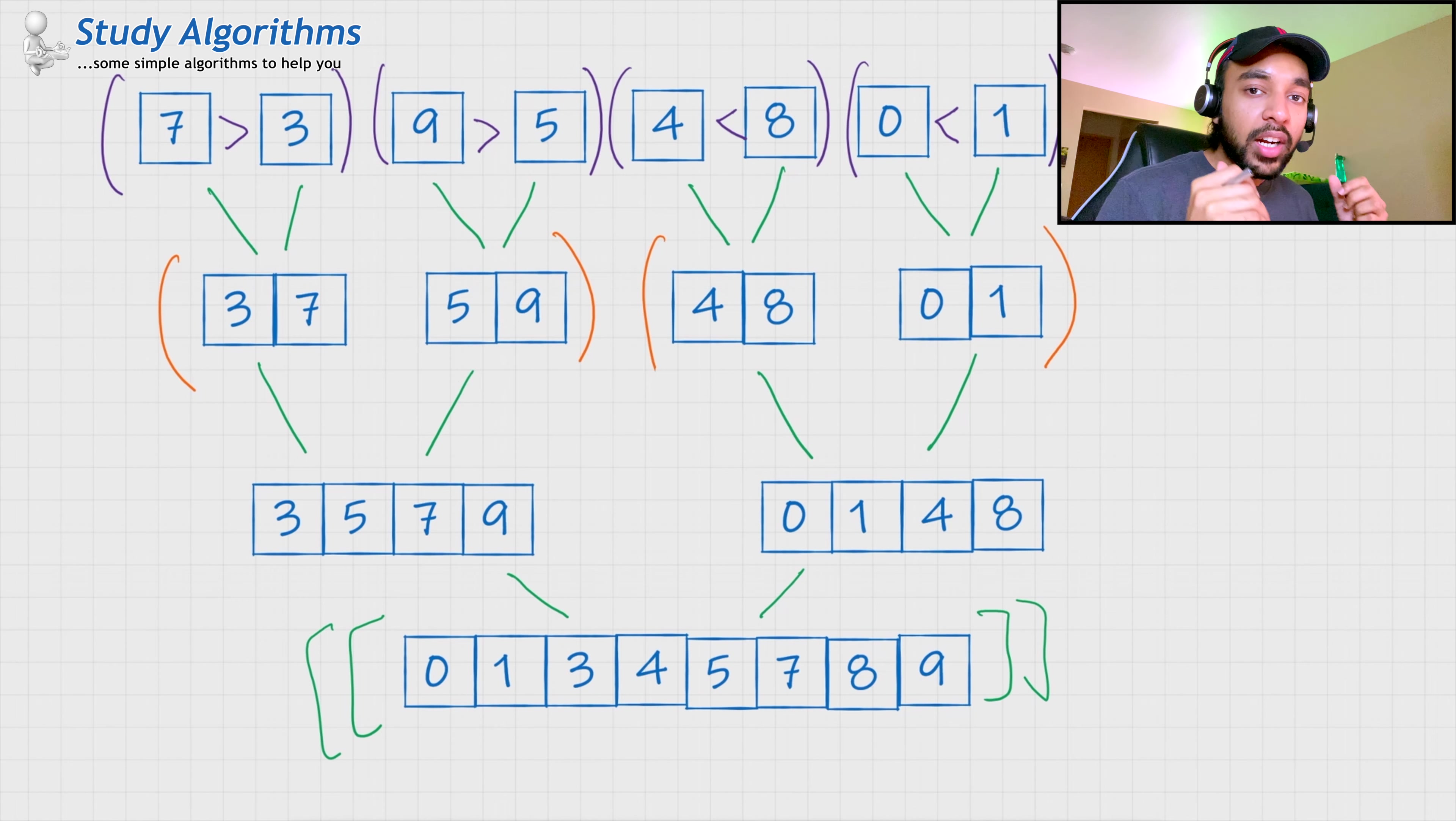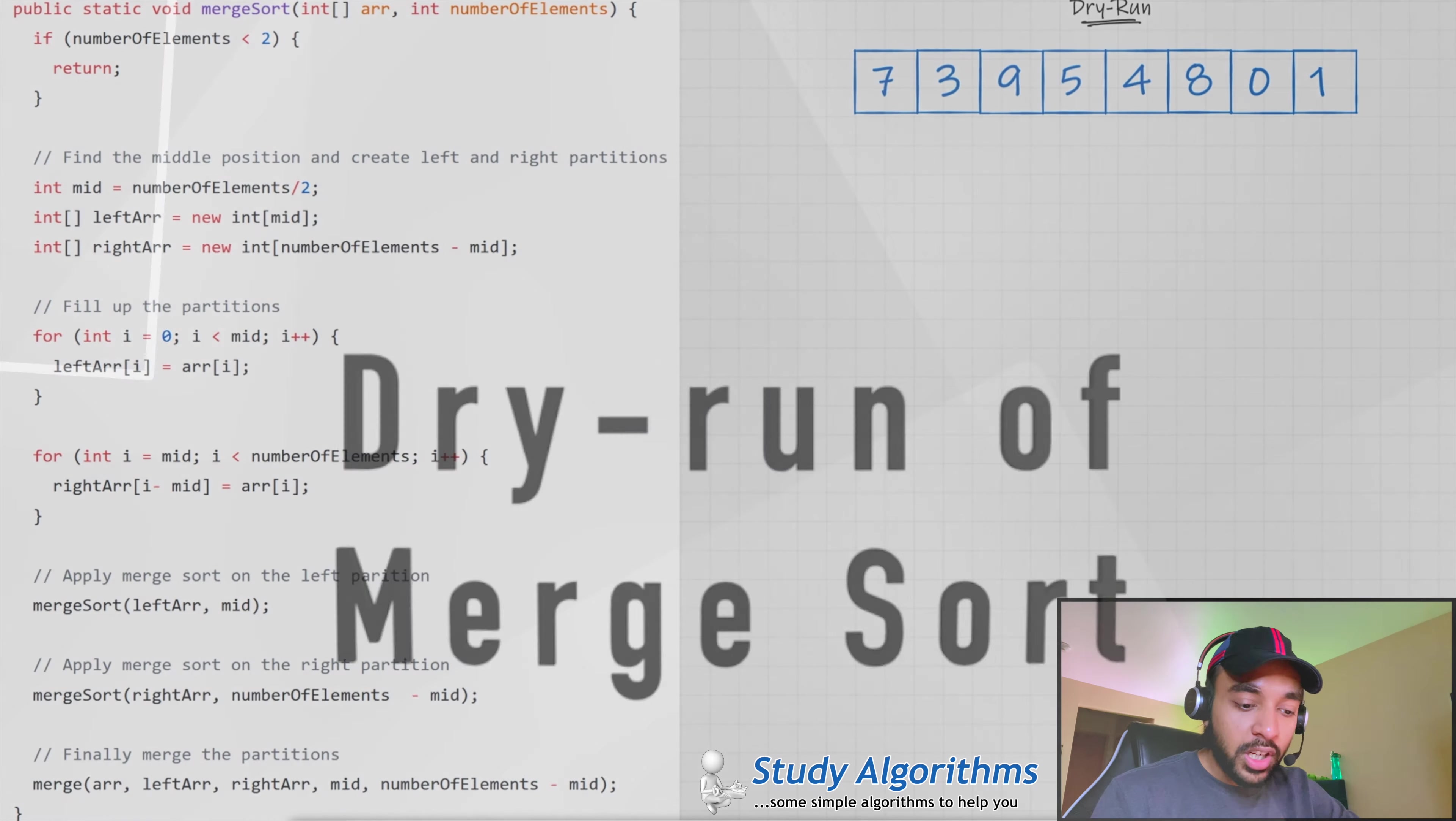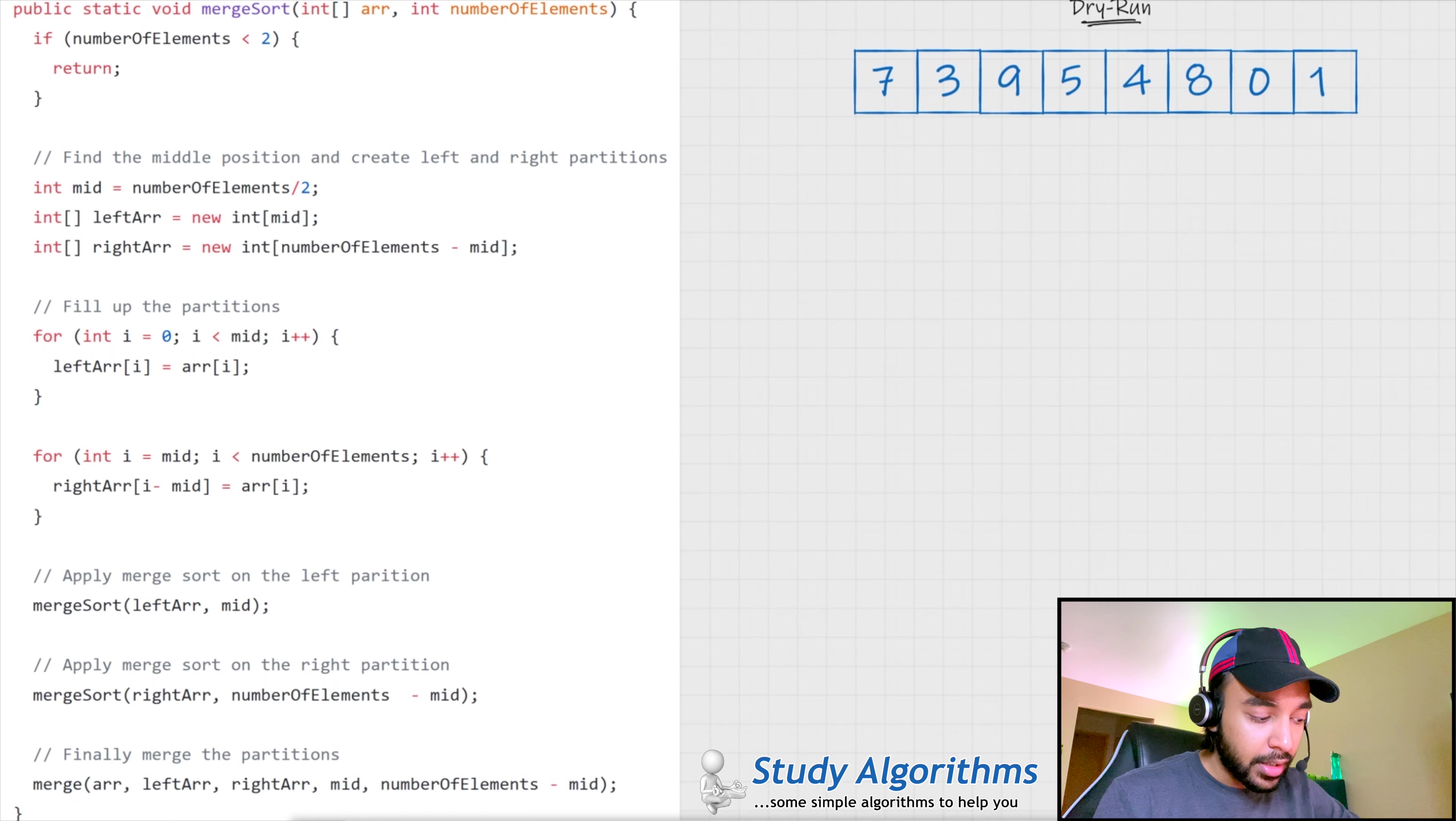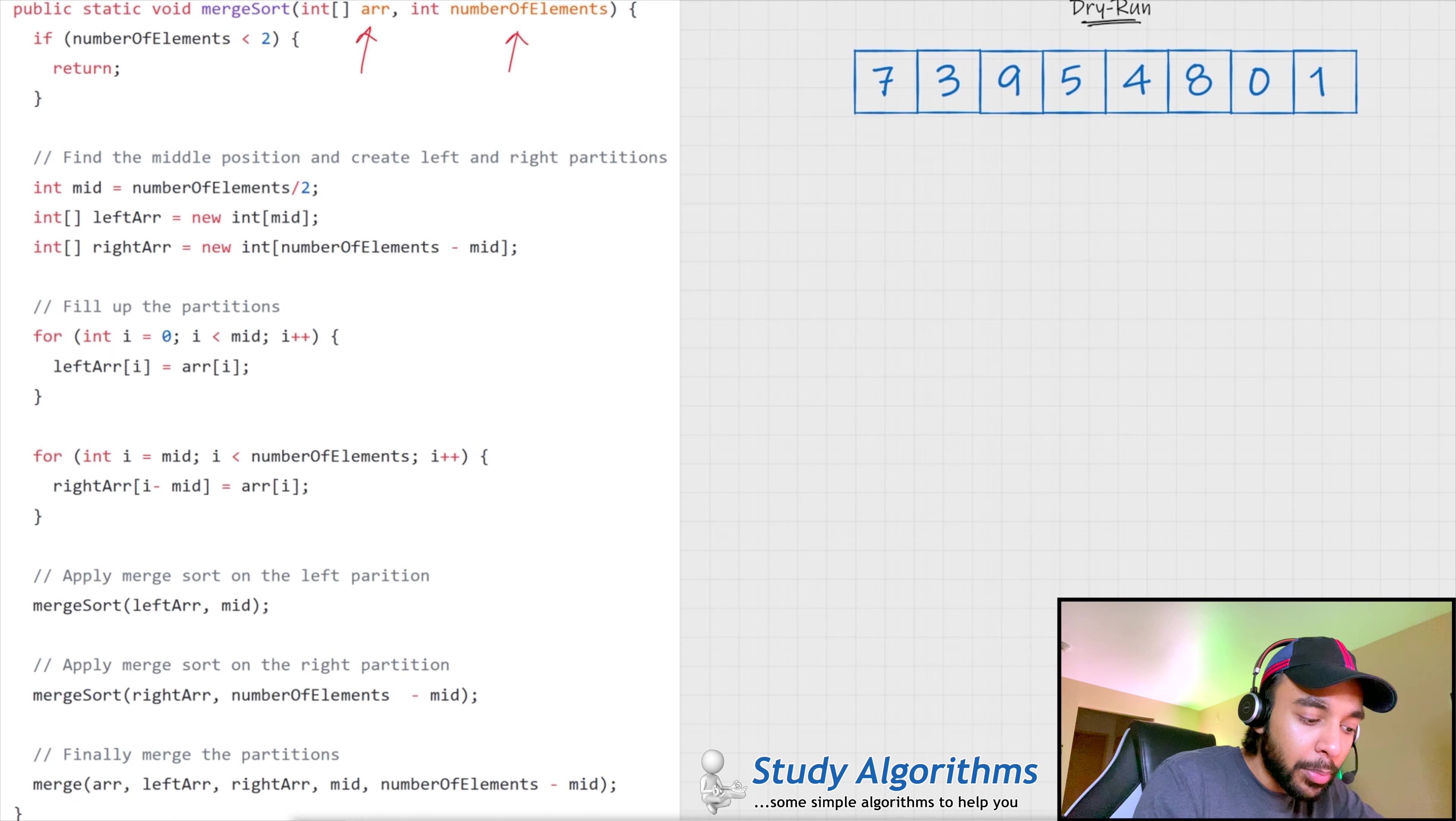Let us now do a dry run of the code to see how all of this is implemented. To understand the dry run of merge sort, I am taking the same example array that we just discussed. So, on the left side of your screen, you have the actual code to implement merge sort and on the right, I have my array. So, I pass in the input parameters ARR as the array and number of elements to sort. So, in this case, ARR is my input variable and the number of elements is 8.